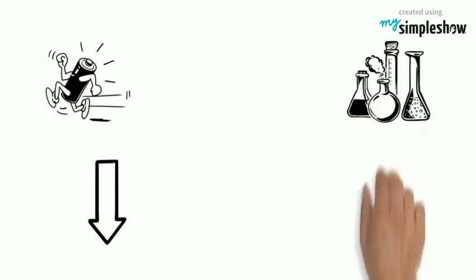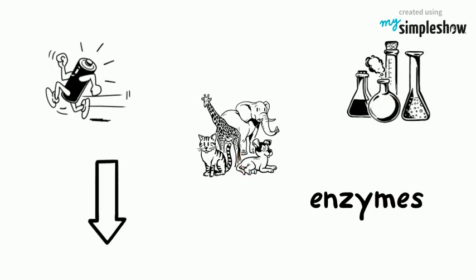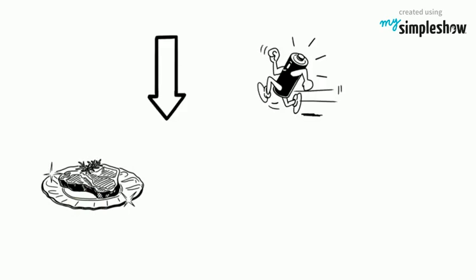A catalyst lowers the activation energy of a reaction. Enzymes are the catalyst of choice for most living things. An enzyme is a protein that lowers the activation energy of a reaction.